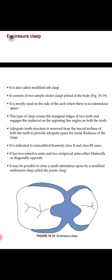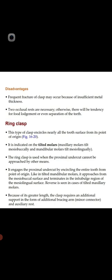Adequate tooth structure is reduced on the buccal incline of both teeth to provide space for metal thickness. The embrasure clasp is indicated in unmodified Kennedy Class II and Class III cases. It has two retentive arms and two reciprocal arms, either bilaterally or diagonally opposite. A modified embrasure clasp called a pontic clasp may be used to close a small edentulous space, acting like an artificial pontic tooth.